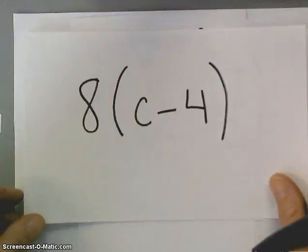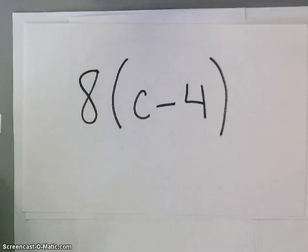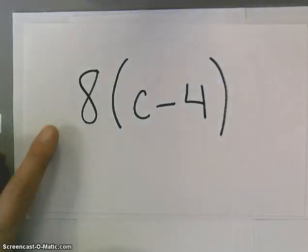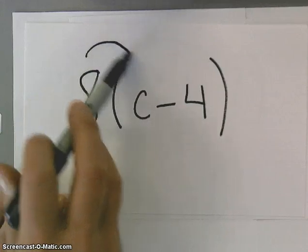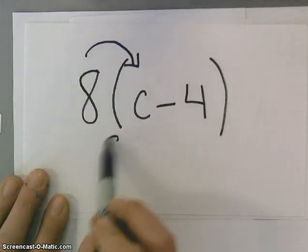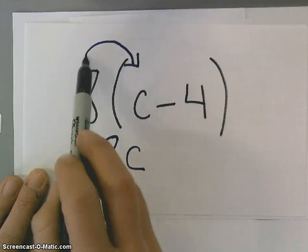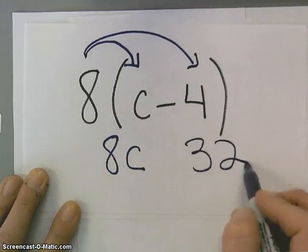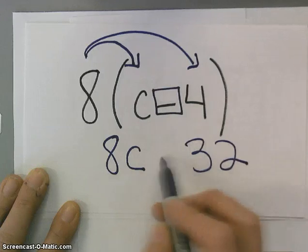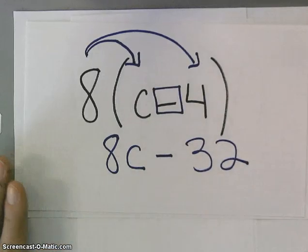For the next example, I have 8 times the quantity c minus 4. Well, same thing. 8's on the outside of the parentheses, which means we have to distribute. So 8 times c is 8c, and 8 times 4 is 32, and I have this subtraction sign here, so I need to subtract 8c minus 32.